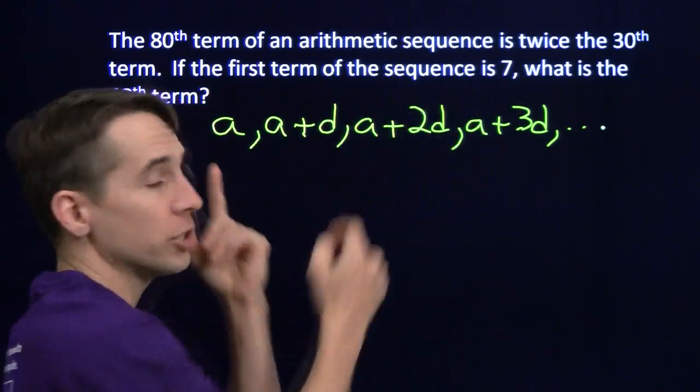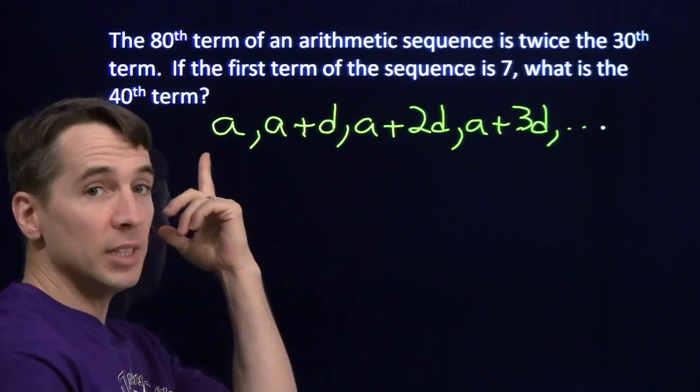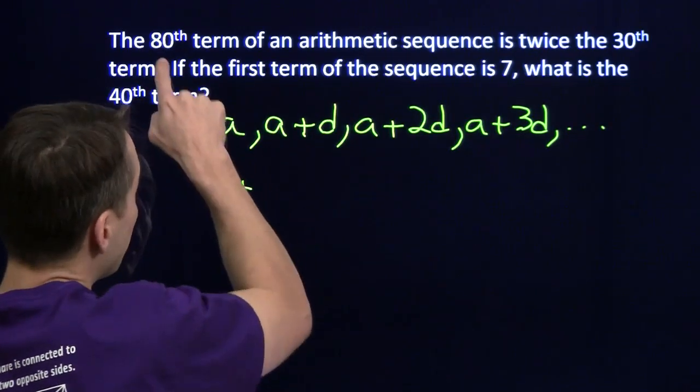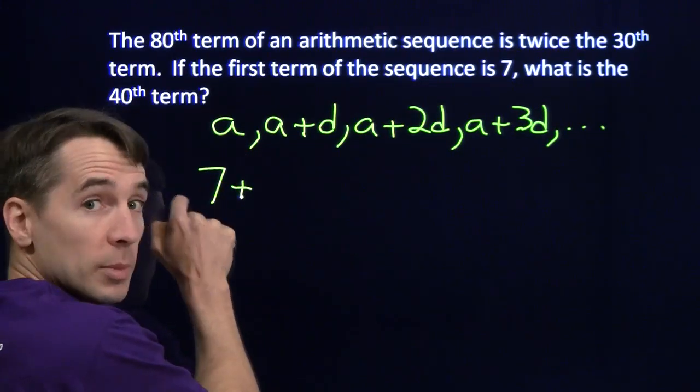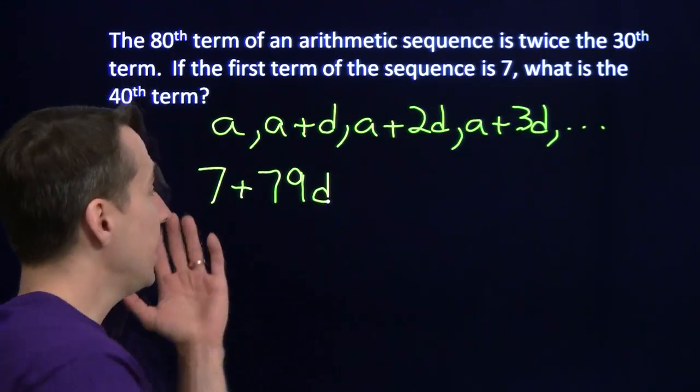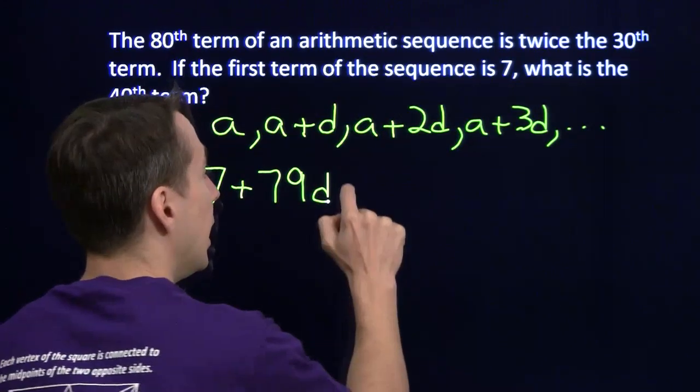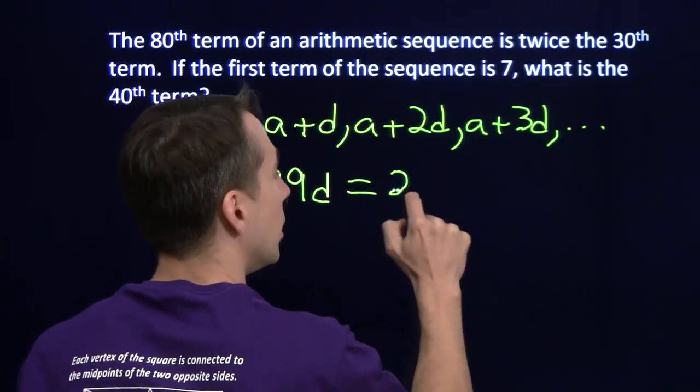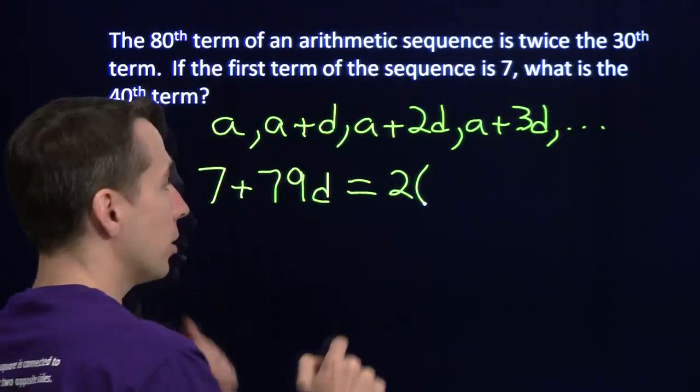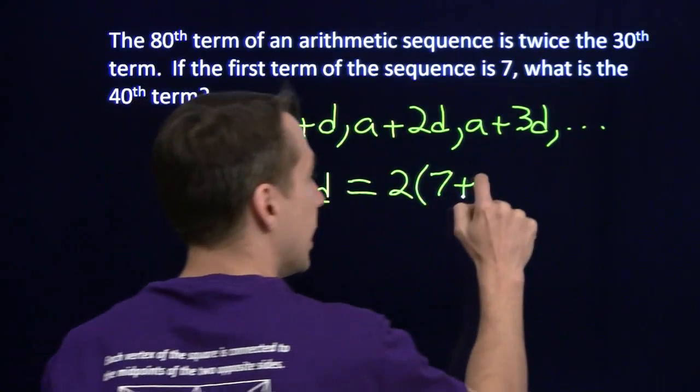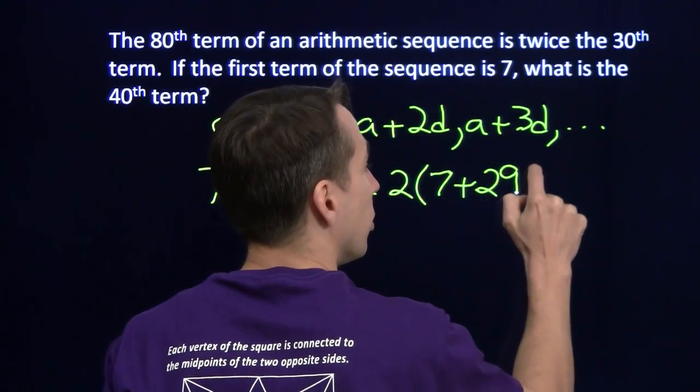Now here, we're told that the first term of the sequence is 7, so we don't even need to write the A down. We'll write down the 7. And we know that the 80th term is the first term, 7, plus 79 steps of length D. There's our 80th term. And we're told that that is twice the 30th term. And the 30th term, we're going to start at the first term, 7, and we're going to take 29 steps to get out to the 30th term.